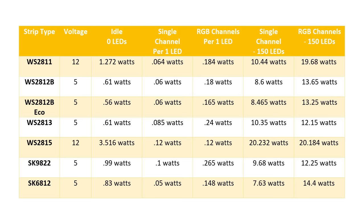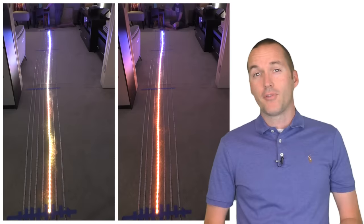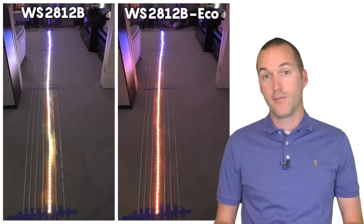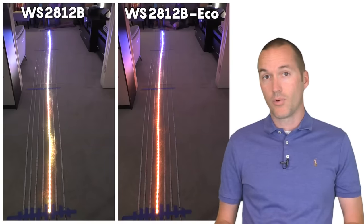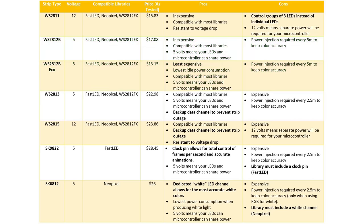I also tested another new variety called the WS2812B Eco. In my test the Eco version had the lowest baseline power consumption, needing only 56mW with no LEDs lit. Being 5 volt strips, both types really struggled to reproduce accurate colors near the end of the strip due to voltage drop, with the Eco version performing slightly worse than the non-Eco version. In general I use WS2812B strips as my general purpose LED strips — they're relatively cheap, come in a huge variety of pixel densities, waterproofing types, and strip colors, and they're compatible with basically every library meant to control individually addressable LEDs.